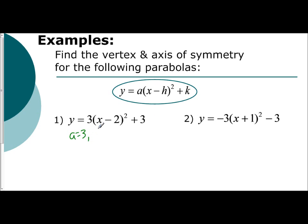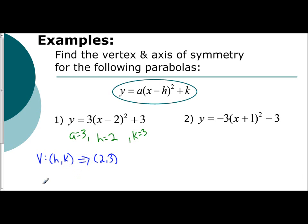So a is 3. Jump over to k — k is 3. Remember, h is the opposite of what you see. H here is 2, and the reason why is the formula says x minus h, so you are subtracting a 2, so h is 2. Our vertex is the coordinate h, k, so that means our vertex is the coordinate (2, 3). Your axis of symmetry is the equation x equals h, so my axis of symmetry is x equals 2.